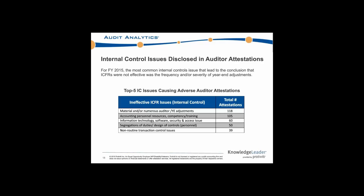Of those roughly 225 companies that disclosed ineffective internal controls, 118 specifically stated an internal control issue because of material and/or numerous year-end adjustments leading to the failure. The second most common reason was accounting personnel resources, competency and training issues — in short, a lack of qualified and trained professionals internally. Also cited were information technology issues, segregation of duties, and then non-routine transaction issues.